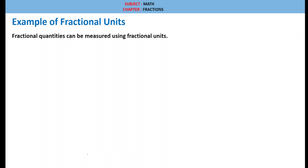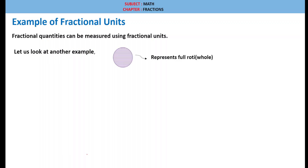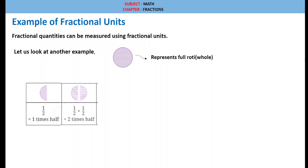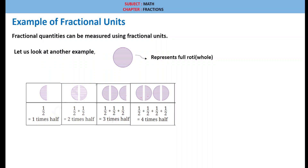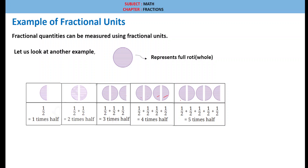Let us see an example of fractional units. Fractional quantities can be measured using fractional units. If this circle represents one full roti, we can express parts of it as fractional units. For example, five times 1 by 2 — that is, 1/2 + 1/2 + 1/2 + 1/2 + 1/2, which is 5 times half.